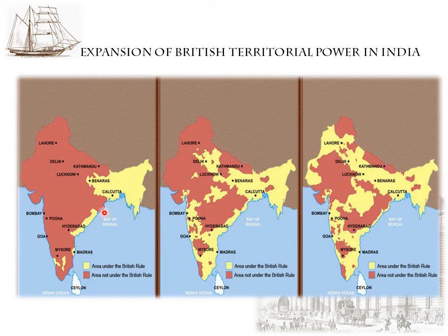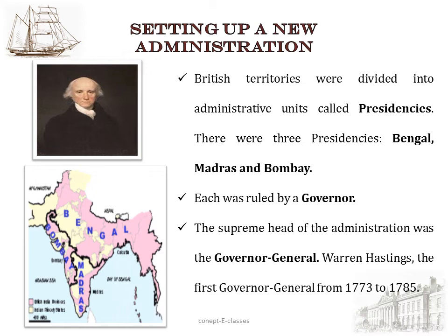This map shows the expansion of British territorial power in India. In 1797, the Britishers had come mainly for trade around Kolkata. By 1840, most of the south as well as the northeast had been annexed by the British. And by 1857, most of the territories of India had been annexed by the British.